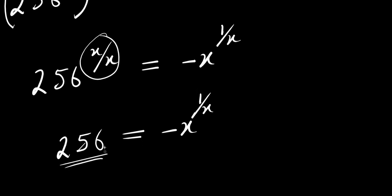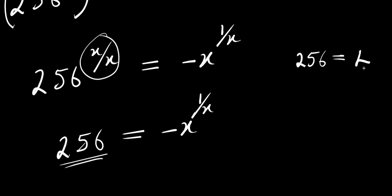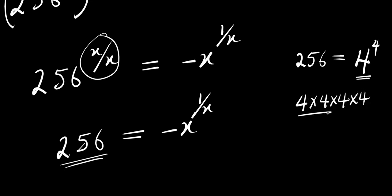We need to express this in exponential form. And 256 is the same as writing 8 to the power of 3 — wait, that is 8 times 8 is 64. Are you sure it's 8 to the power of 3? No. I think this should be 4 power 4, because 4 raised to the power of 4, that is 4 times 4 times 4 times 4, that is 256. So that is it.